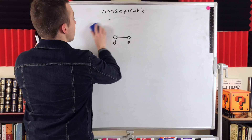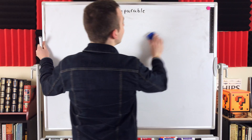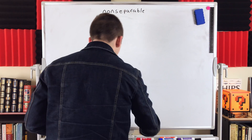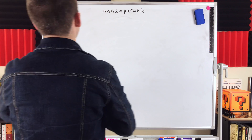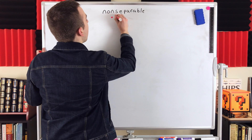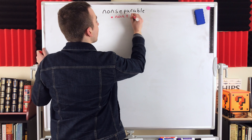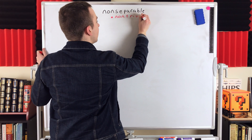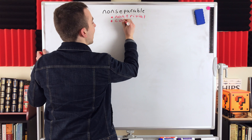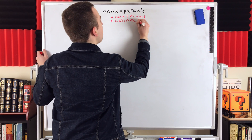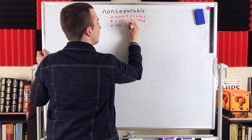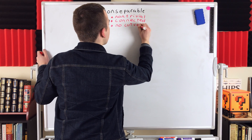We can pretty quickly define non-separable graphs. A non-separable graph is a non-trivial connected graph with no cut vertices. Pretty straightforward — it's a graph that can't be separated by deleting vertices.